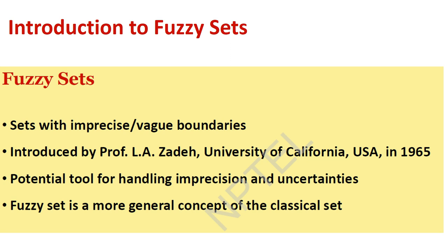We need something higher level to represent the different types of uncertainties or imprecision we face in real world problems. Let me take a very simple, practical example. Suppose one of your friends is going to market and you request him to please bring 1 kg of red apple for me. Suppose your friend has got the apple from the market, and there is a probability associated with the availability of apple that depends on the season.